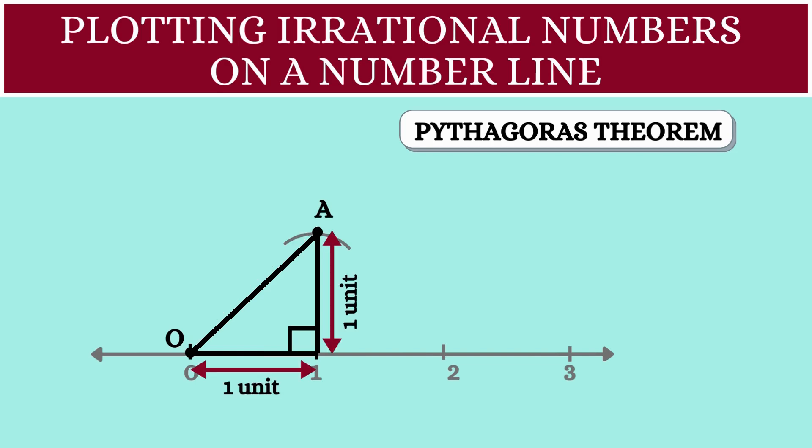So, we can say that OA square is equal to 1 square plus 1 square. OA square is 1 plus 1, which is 2. So, the length OA will become square root of 2.